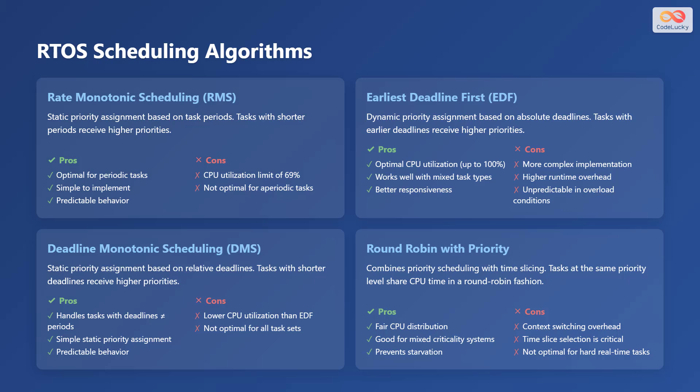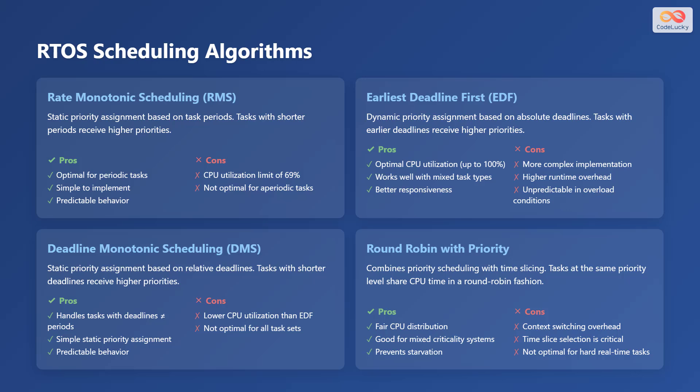Next is deadline monotonic scheduling, or DMS. It uses static priority assignment based on relative deadlines — tasks with shorter deadlines receive higher priorities. Its advantages are that it handles tasks with deadlines not equal to their periods, simple static priority assignment, and predictable behavior. The disadvantages are lower CPU utilization than EDF and it's not optimal for all task sets. Finally, round-robin with priority combines priority scheduling with time slicing. Tasks at the same priority level share CPU time in a round-robin fashion. Its advantages are fair CPU distribution, suitability for mixed criticality systems, and prevention of starvation. Disadvantages include context switching overhead, critical time slice selection, and it's not optimal for hard real-time tasks.